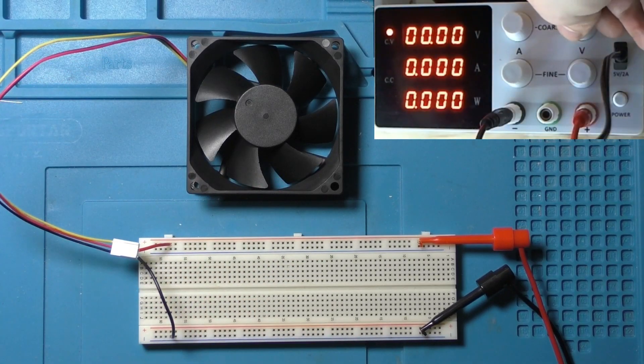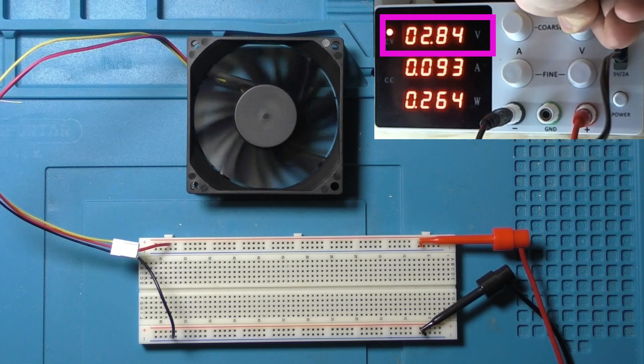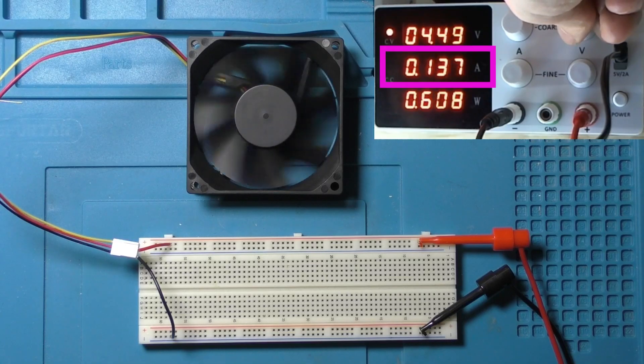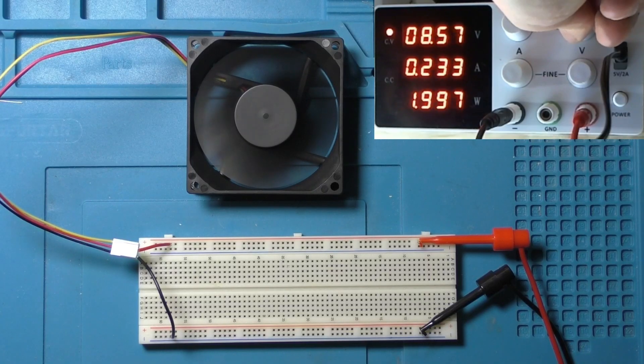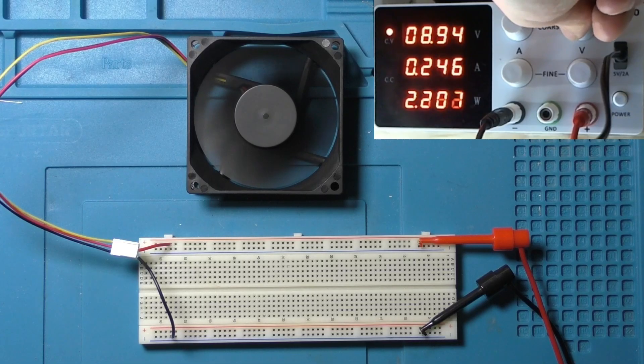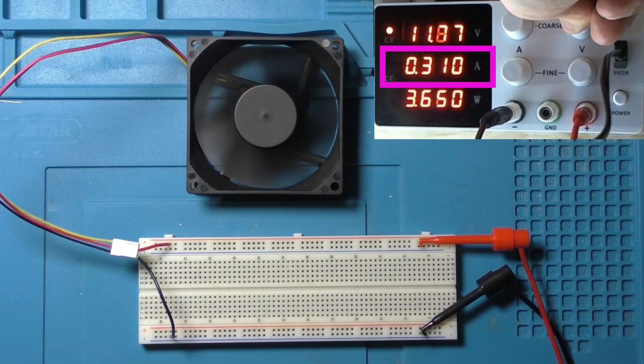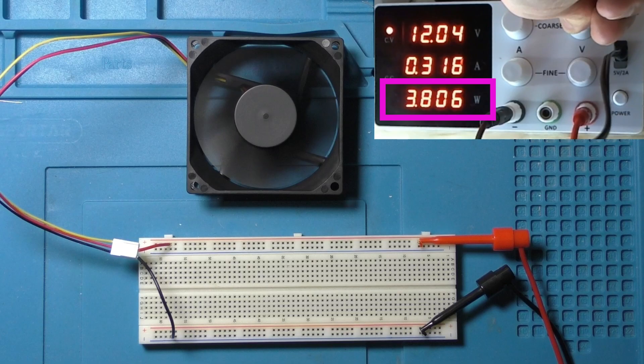As we raise the voltage to 12 volts the fan speeds up. You can also see that as the voltage goes up the current measured in amps also goes up and the overall power measured in watts also goes up. At 12 volts the fan is at full speed. There's about 300 milliamps running through the circuit and the overall power of the fan is about 3.8 watts.